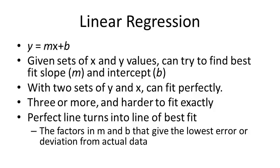When we're given two points of x and y it's very easy to find what m and b are going to be. Once we're given three or more it's harder to find an exact fit — sometimes it's not going to be a perfect line, so we try to find a line that fits as close as possible. This is called the line of best fit: the values for m and b that will give the lowest error or deviation from the actual data.